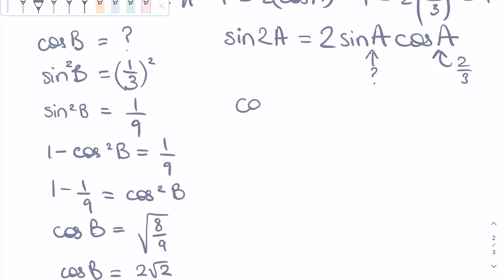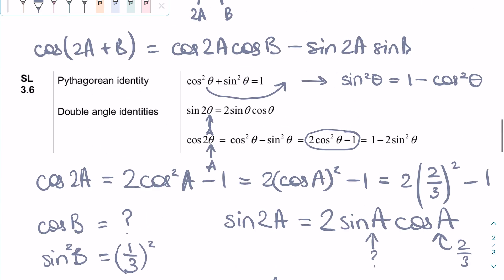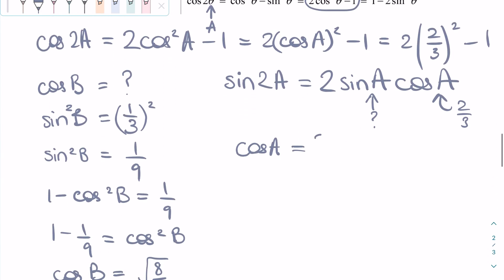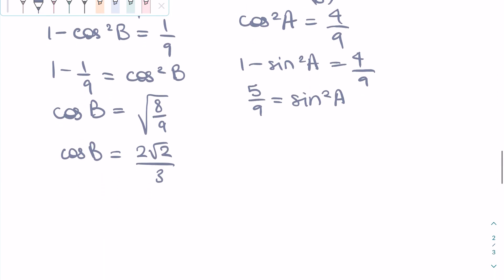We can use the same process that we used for finding cosine B, by using the Pythagorean identity. We start with a given cosine A is 2/3. We square both sides. We get cosine squared A is equal to 4/9. We replace that with 1 minus sine squared A is equal to 4/9.